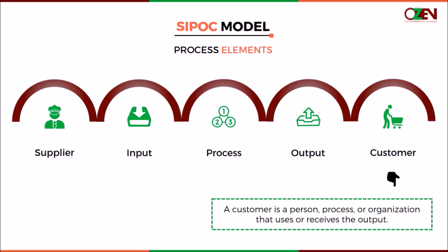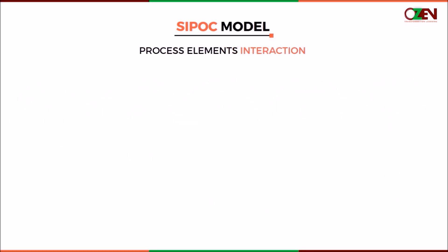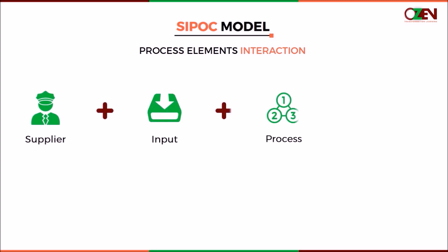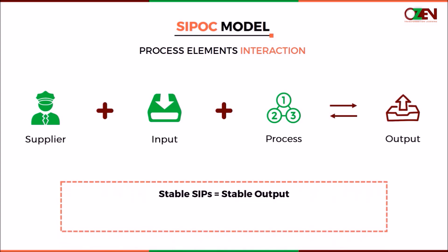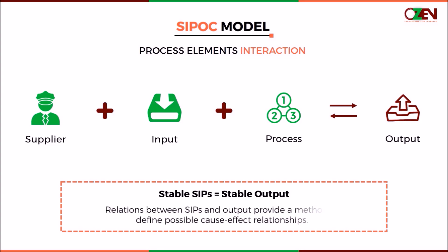With this understanding, let's discuss how the SIPOC elements interact. One or more changes in supplier, input, or the process actions — the SIPs — will result in a change in the process output. If the SIPs are stable, the output will be stable or consistent. Consistency is the most important factor in a Six Sigma project. Relations between SIPs, or the SIPs and output, provide a method to define possible cause-and-effect relationships. These relationships can be termed as closed-loop business systems.